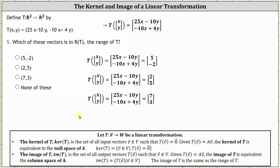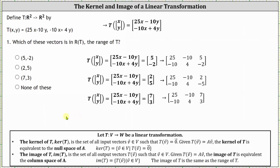To solve the systems, we'll use augmented matrices. For the first system, the first row is 25, -10, 5, and the second row is -10, 4, -2. For the next two systems, the only change is the third column — the third column is the vector we're trying to determine if it is in the range or image of T.